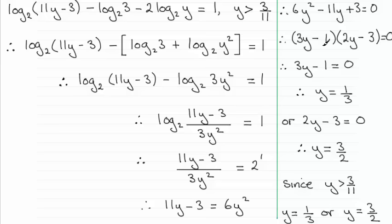Each of the factors then is equal to 0 and that leads to y equalling a third or y equalling 3 over 2. Do check out your answers, check that they are greater than 3 elevenths. Well they both are, so that leads us to our two answers: y equals a third, or y equals 3 over 2.